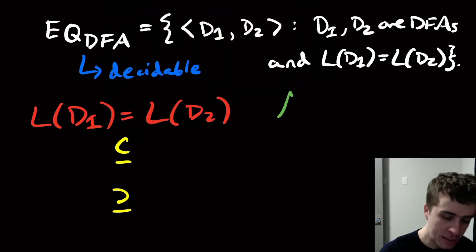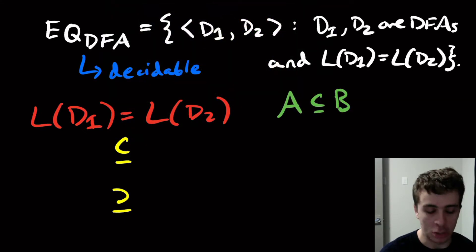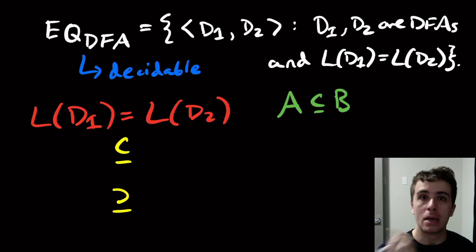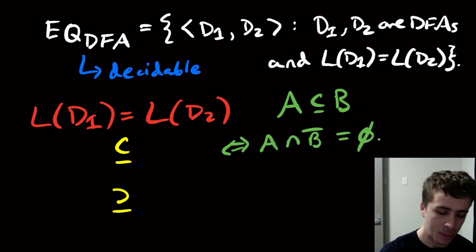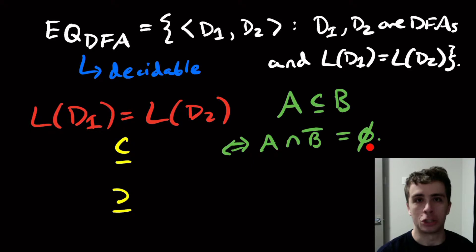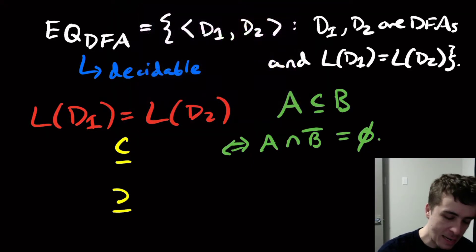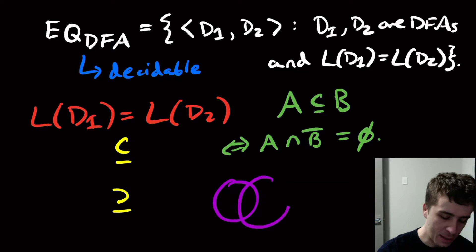If we look at the expression A is a subset of B, is there another way that we could phrase that? It turns out there is a very useful one. This is true if and only if A intersection the complement of B is empty. This kind of makes sense because this expression is saying all the strings that are in A and not in B, there are no such strings.